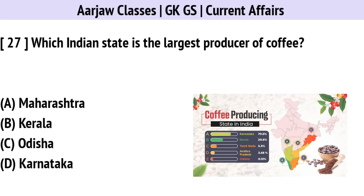Which Indian state is the largest producer of coffee? Correct option is D — Karnataka.